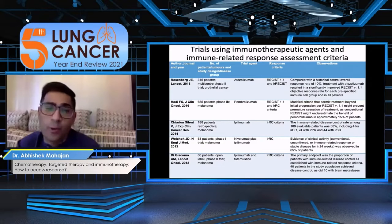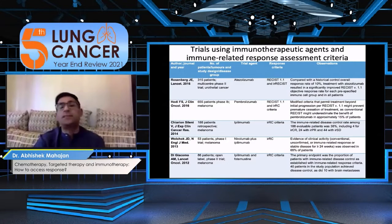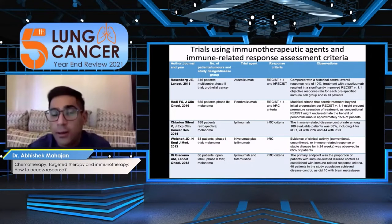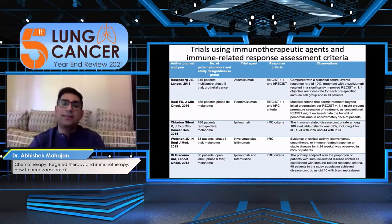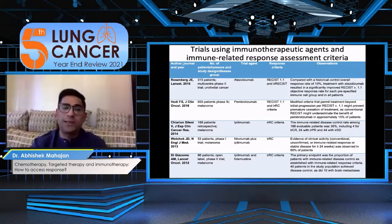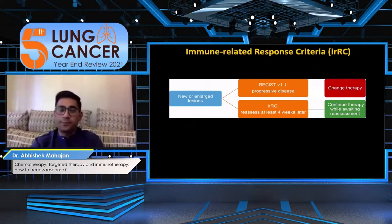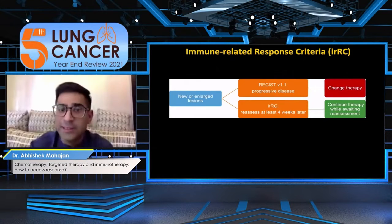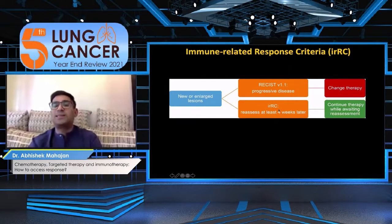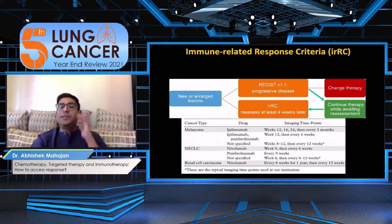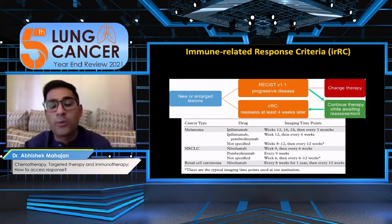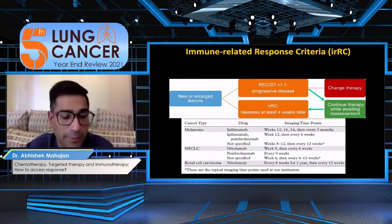That leads to the question: is RECIST enough? RECIST is not enough in assessing immune response for immunotherapy agents, and hence there are guidelines specific to assessment of tumoral response — the iRECIST. The major difference in iRECIST is to reassess the tumor if you have seen tumoral progression and still continue the therapy, then confirm whether it is true progression versus stable disease.